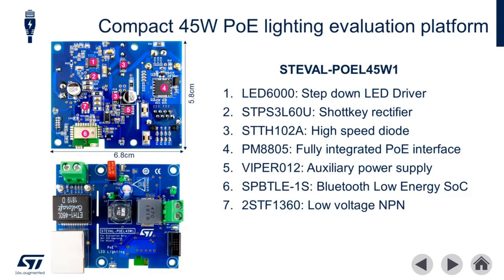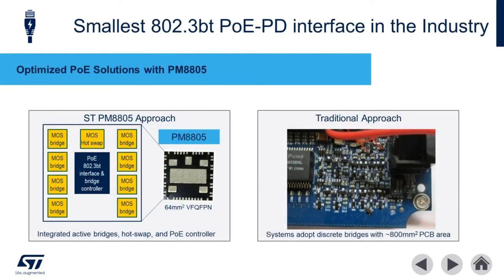The ST EVAL POEL 45W1 is a fully featured evaluation platform that provides high feature density. This evaluation board is very compact, measuring in at just 6.8 centimeters by 5.8 centimeters. The PM8805 POE interface chip is the smallest 99 watt capable interface in the industry. It's a complete 802.3BT interface, bridge, and controller in one package.